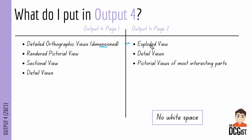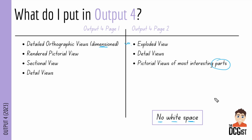On Page 2 you'll also have more detailed views and pictorial views of the most interesting parts. Note that you're not only showing views of your assembly — you're also showing views of individual parts, to demonstrate that you're able to do that. One of the key things is to keep the white space to a minimum. We don't really want any white space on either of these sheets, so use everything available to you.